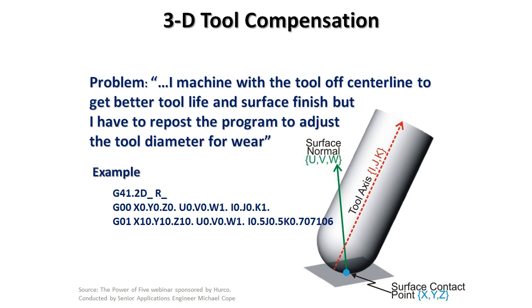More evident in something like a bull nose. You may have a half inch diameter tool with a 30,000th radius on the corner.